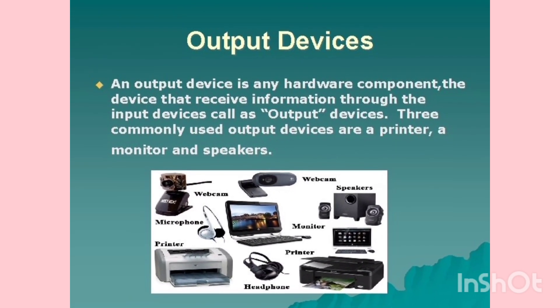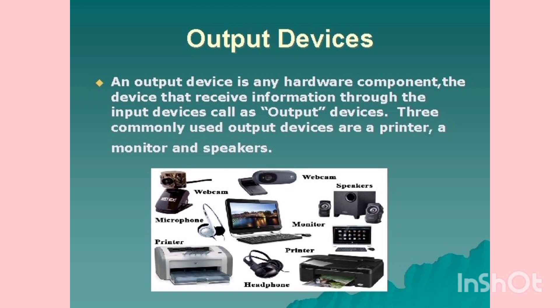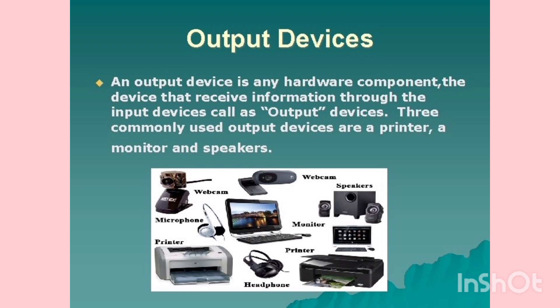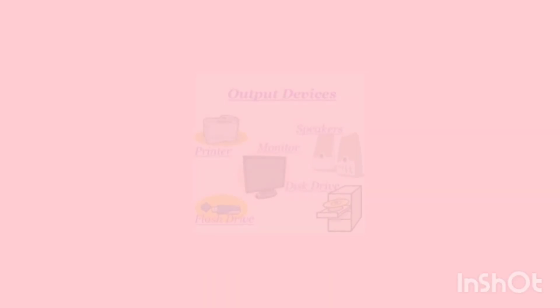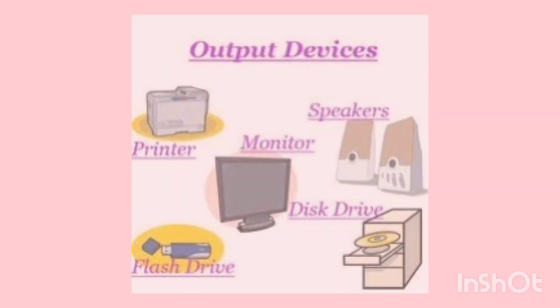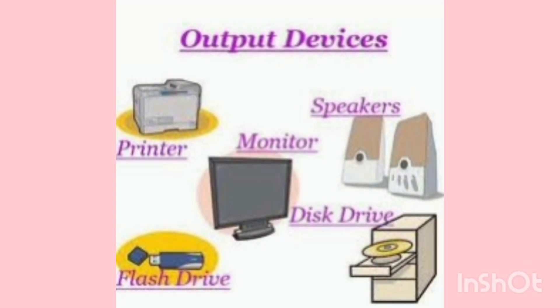An output device is any hardware component that receives processed information from the computer. Three commonly used output devices are printer, monitor, and speaker. Here are pictures of output devices: printer, monitor, projector, and speaker. The computer gives us processed data or information with the help of these devices.